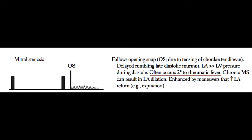Chronic mitral stenosis can result in left atrial dilatation, which can cause atrial fibrillation over time. A mitral stenosis murmur is classically enhanced by maneuvers that increase left atrial return, such as expiration. You can also have the patient exercise to increase cardiac output, which will increase the gradient across the mitral valve and increase the sound of the murmur.